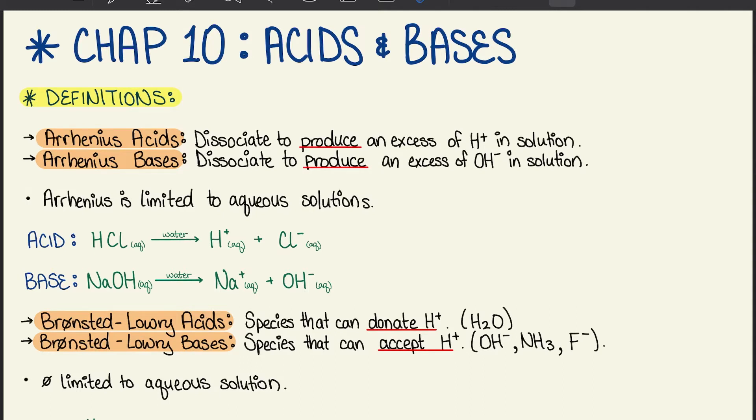Arrhenius acids dissociate to produce an excess of hydrogen ions in solution, whereas bases dissociate to produce an excess of hydroxide ions in solution. Arrhenius is limited to aqueous solutions, and that's really important to know.